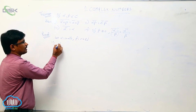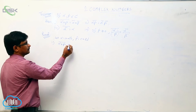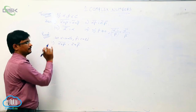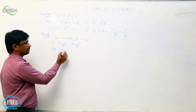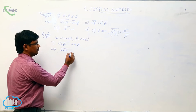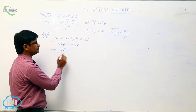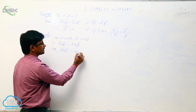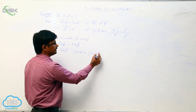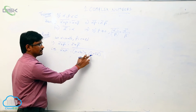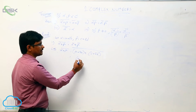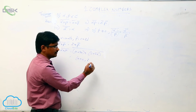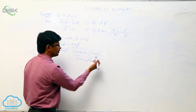First, we will prove that the conjugate of alpha plus beta equals alpha conjugate plus beta conjugate — also read as alpha plus beta complement. Consider the LHS: conjugate of alpha plus beta. Substituting alpha as A plus iB and beta as C plus iD, we get the conjugate of A plus iB plus C plus iD. Adding corresponding values: A plus C, and iB plus iD, so we take i common giving i(B plus D), all conjugate.